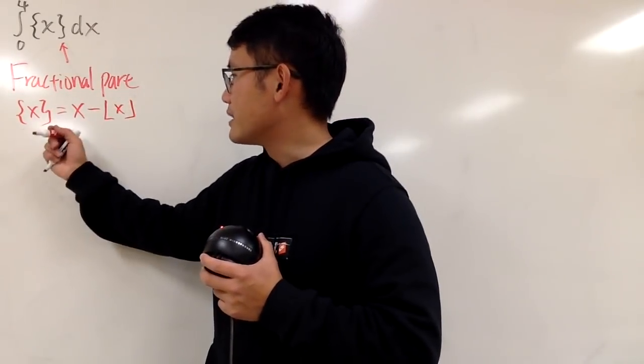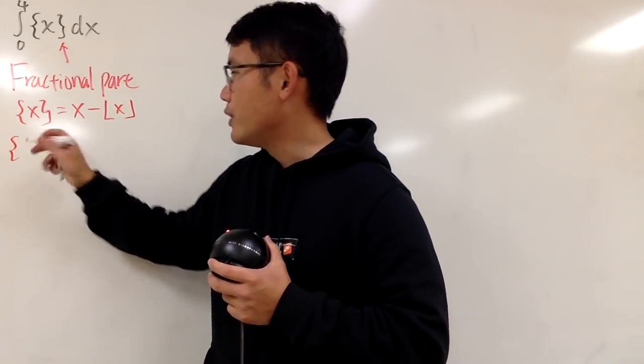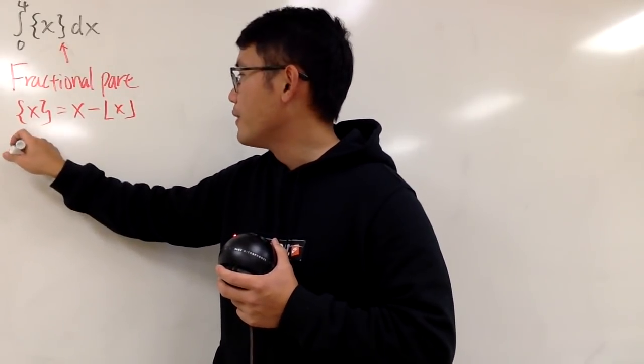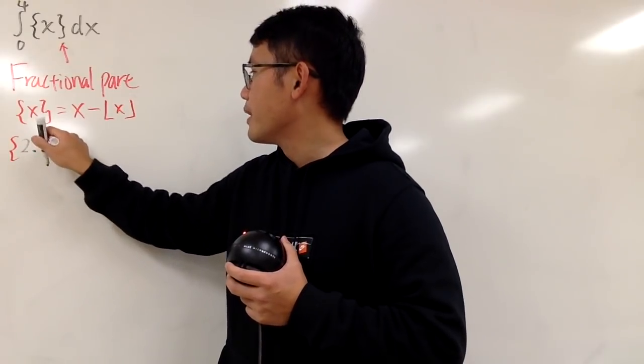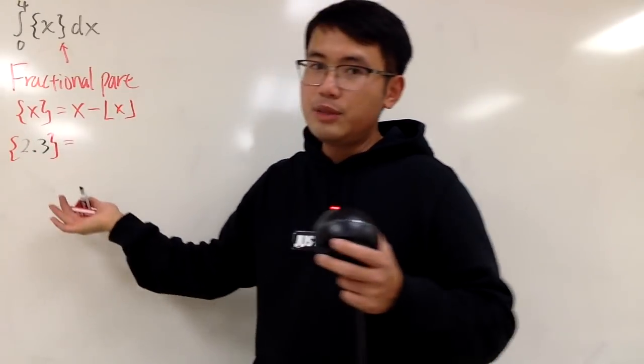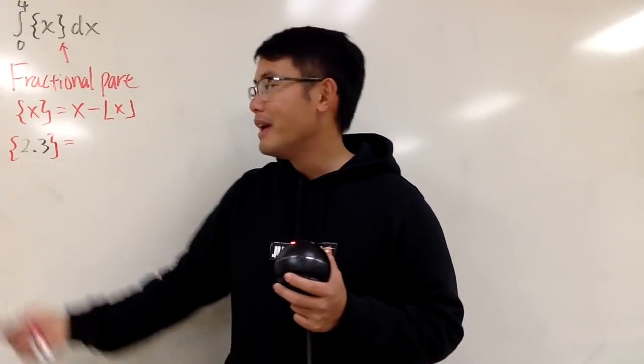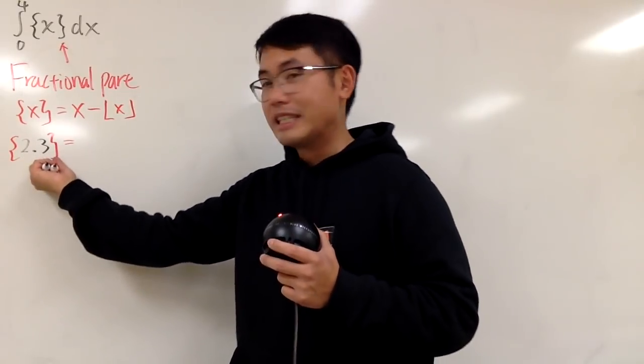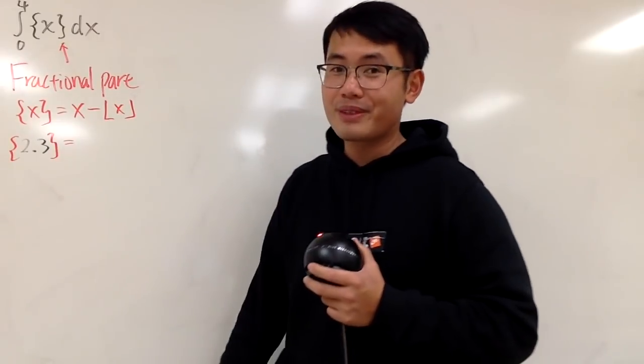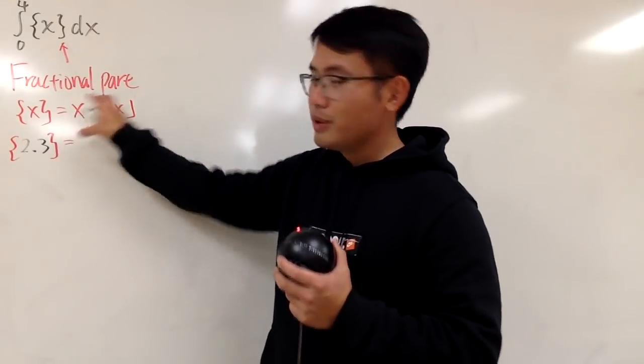Well, let's do some examples. Let's talk about what we have, the fractional part of 2.3. Well, the easy way to do it is that if you have a positive decimal number in here, then you pretty much just get the decimal part, so you get 0.3, okay? And of course, you can also use this little definition.